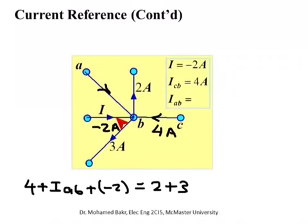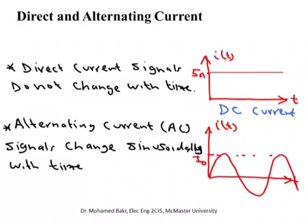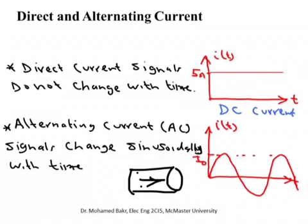Currents can be DC — constant with time — or AC — oscillating with time. It depends on the electric field that moves the charges. If the electric field is constant and pointing in the same direction, we get a DC current. But if the electric field changes direction sinusoidally over time, the current will reverse its direction as well. Alternating current simply means the electric field causing the charges to move is changing direction periodically, which causes the charges to start moving in the opposite direction.